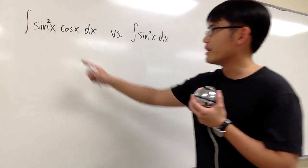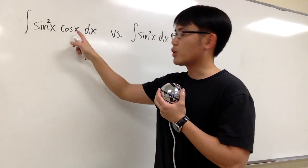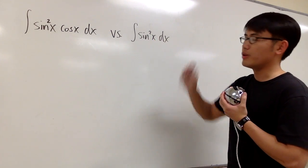Let's take a look at these two integrals. The first one is the integral of sin squared x times cosine x. The second one is just the integral of sin squared x.